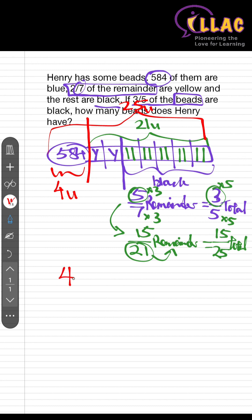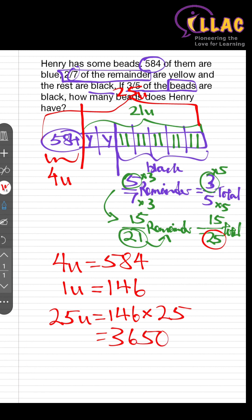Given that 4 units is actually 584, I will be able to derive the fact that 1 unit is 584 divided by 4, and I will get the answer 146. And the question says, how many beads does Henry have? Henry has a total of 25 units over here, so 25 units will be 146 times 25, and you will get the answer 3650.